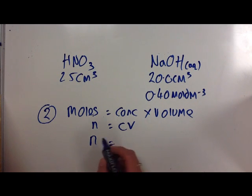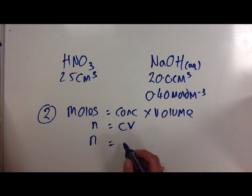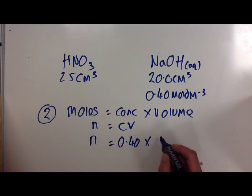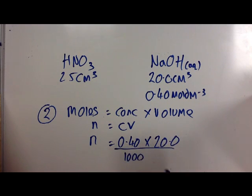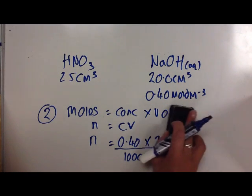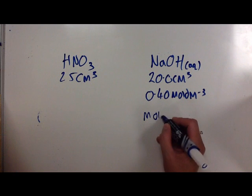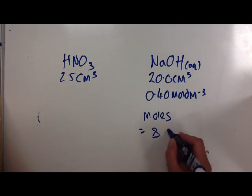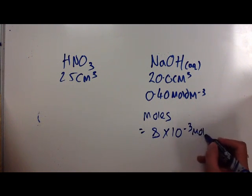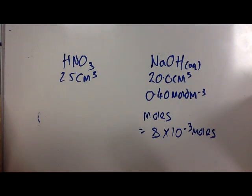The only trick to this bit is that we need to change our volume from centimetres cubed to decimetres cubed. So, putting that into our equation, N equals concentration, which is 0.40, multiplied by our volume, which is 20. We need to divide it by 1000 to make it in decimetres cubed. This gives us the number of moles, 8 times 10 to the minus 3. So, we now know that the number of moles of sodium hydroxide equals 8 times 10 to the minus 3 moles. That's the end of our step two.